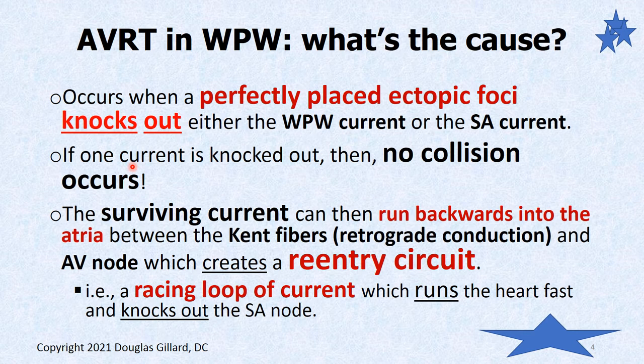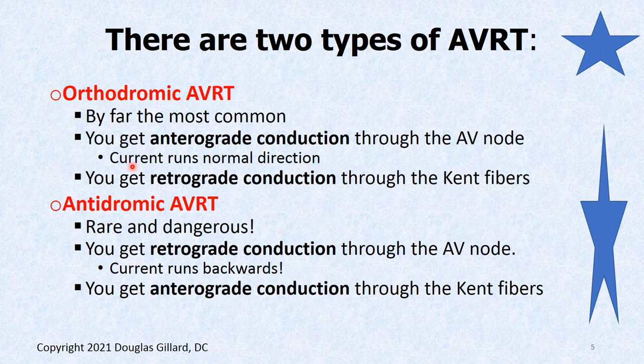The surviving current runs backwards through the atria via the Kent fibers. Running backwards through fibers or the AV node is called retrograde conduction. There is one rare form of AVRT that actually goes normally through the Kent fibers — that's called anterograde conduction. Bottom line, it results in a looping type of current called a reentry or reentrant circuit, and that looping current can make the heart go really, really fast.